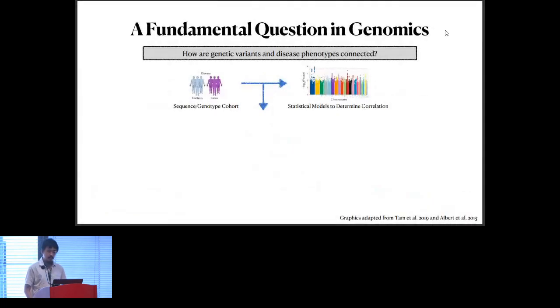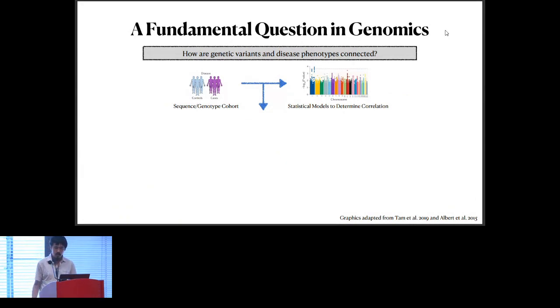Allow me to begin by first introducing the fundamental question in genomics that I'm sure we're all familiar with: how disease phenotypes and genetic variants are connected. For the last 20 years or so, since the advent of genome sequencing, the main approach for achieving this task has been the GWAS, where we take cohorts of patients and compute statistical associations between their genotypes and phenotypes.